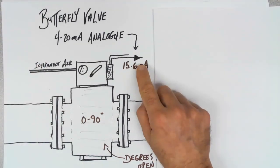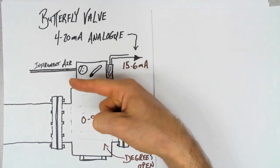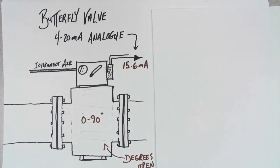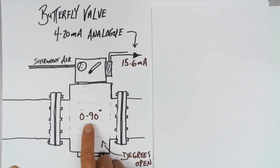The 15.6 milliamps is going to be used from the PLC in order to tell this butterfly valve how far to open. We need to know what the range is that we're expecting. For this particular type of system, 0 to 90 degrees is what we're going to be operating with. That's as far as that valve will open. 0, which would be fully closed, or 90 degrees, which would be fully open.